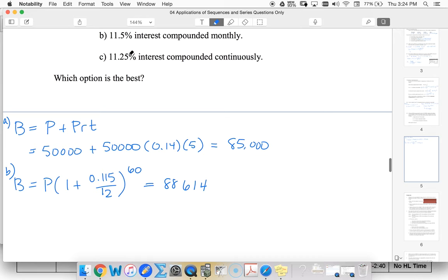Let's see if 11.25 percent compounded continuously gives us the best rate. That's principal times e to the rt. Let's see what we get.